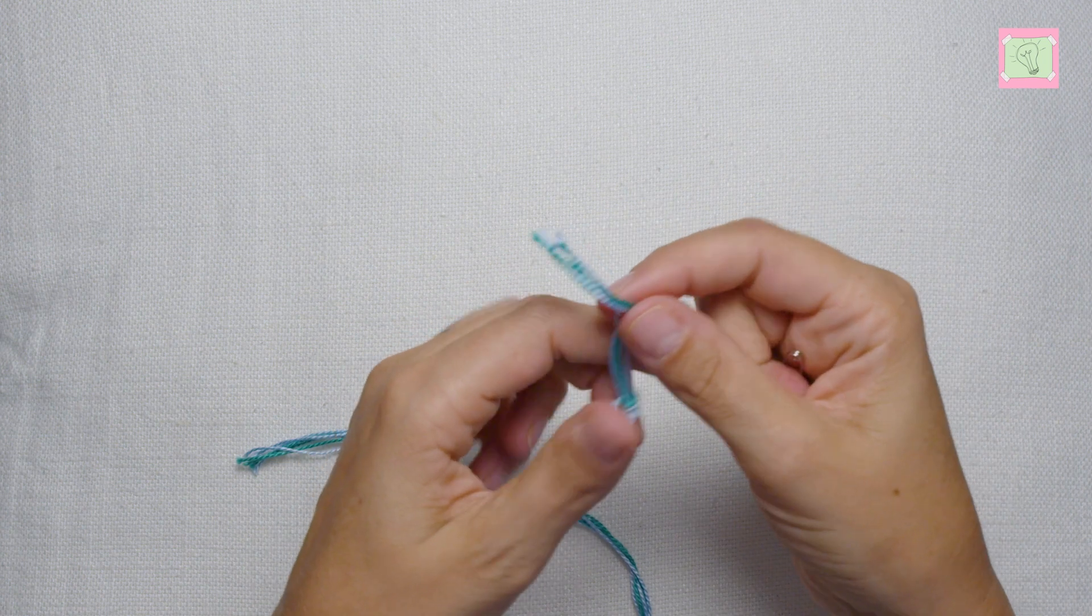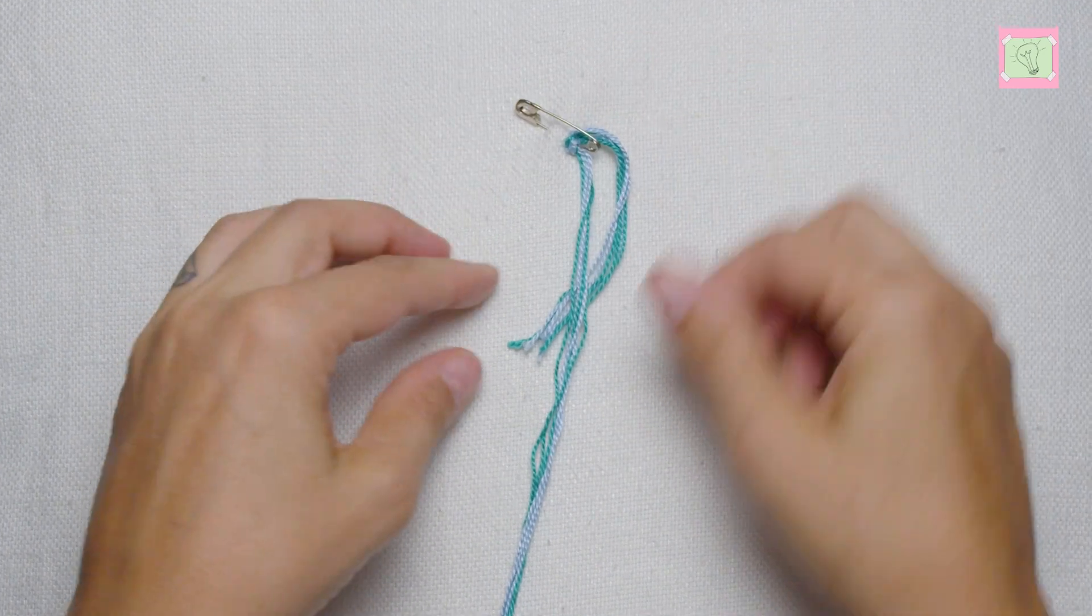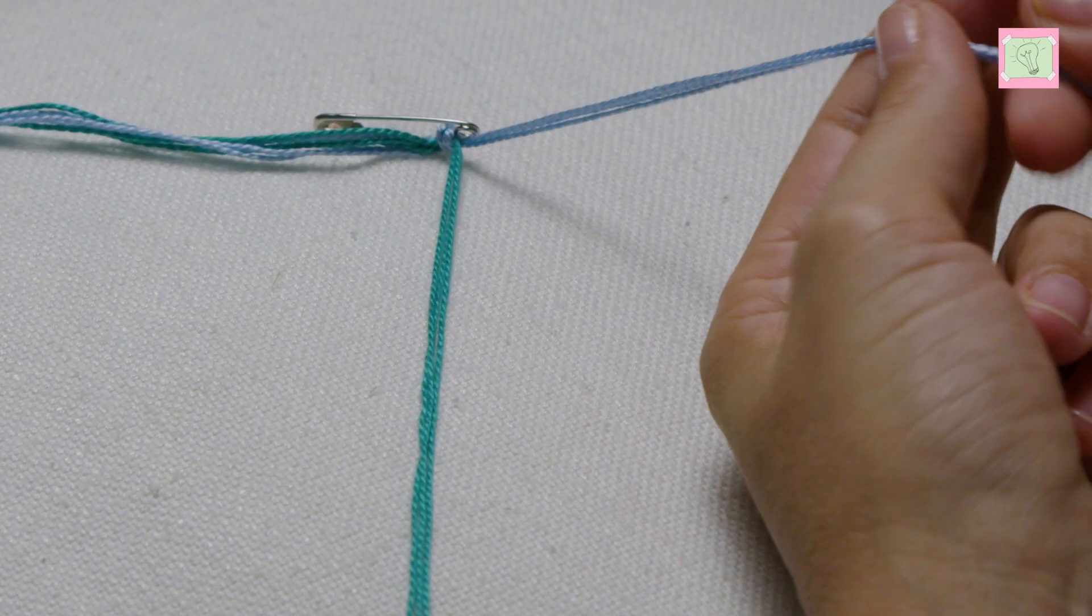I make the twisted bracelet on a pillow so I put a safety pin in the knot which I attach to the pillow. Now I start with the twisting.